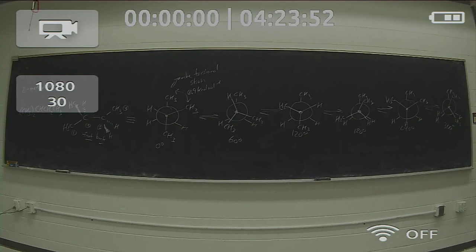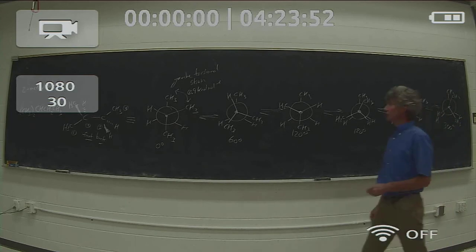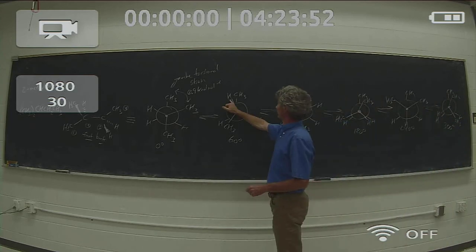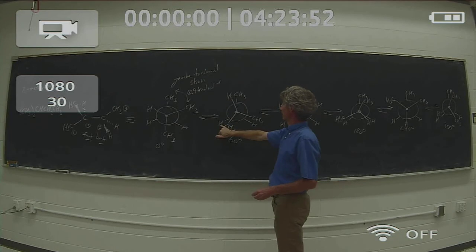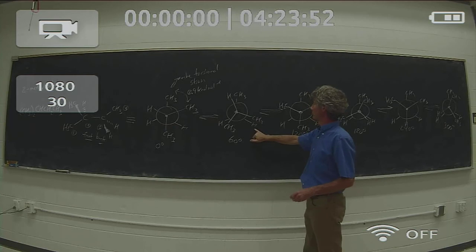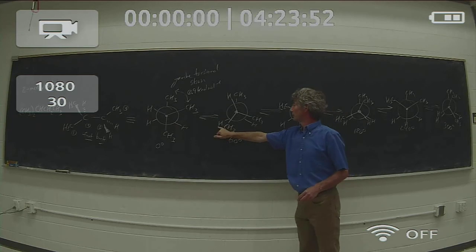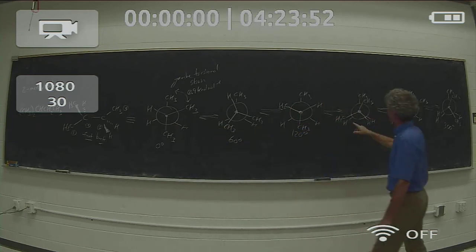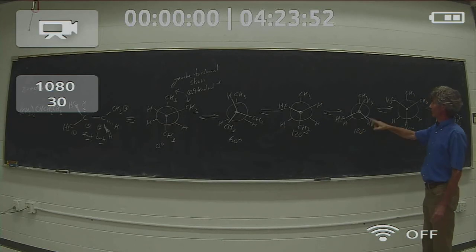You'll notice in all my eclipsed conformations, I'm making sure that only one of the atoms attached to the front carbon is between any two of the atoms on the back. This hydrogen is between the top CH3 and the hydrogen on the left. This atom here is between the top CH3 and the hydrogen on the right, and this atom here is between these hydrogens. So in all cases, I've got it so that I don't have two in front.